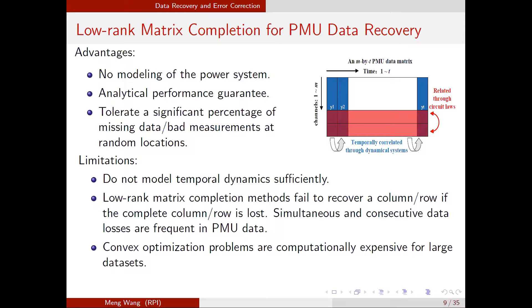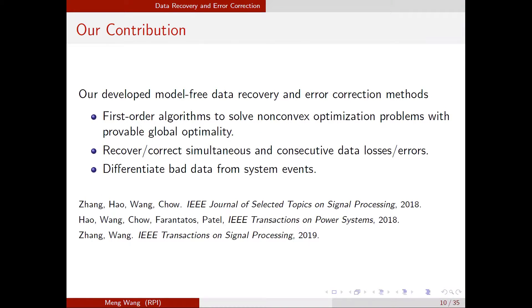Our contribution addresses these limitations. We develop fast algorithms that still exploit the low-rank idea with provable guarantees showing recovery of the ground truth data matrix. We address the fundamental limitation by recovering simultaneous and consecutive data losses or errors across all channels. Using our approach, even if all measurements in all channels are lost for some time or corrupted by cyber intruders or device/communication issues, we can correctly recover them. These approaches are fast enough for real-time implementation.